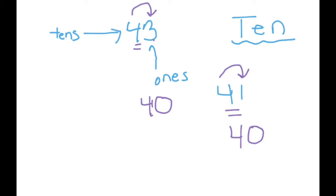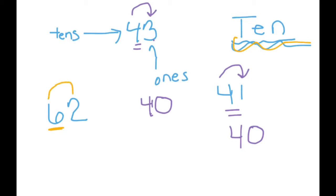Let's switch it up a little bit. This time let's look at the number 62, and we're again looking for the nearest ten. The first thing we do is find our number, which is the six, because we're looking for the tens place. We go next door — is that two four or more? It's not. So the six stays the same, and everything behind it changes to a zero. So 62 to the nearest ten is 60.